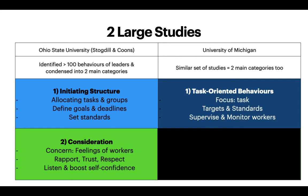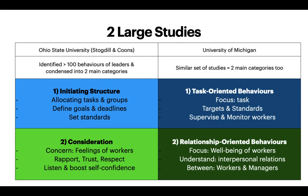On the University of Michigan side, there are task-oriented behaviors — leaders who focus on the task: what needs to be done, targets, standards, as well as supervising and monitoring workers. Quite similar to initiating structure. There are also relationship-oriented behaviors, which focus on the well-being of workers and understanding interpersonal relationships. When managers take care of their staff, their staff definitely enjoy working for them. So whether it's focusing on the task or the relationship, these are the two broad categories for leaders in terms of behavior.